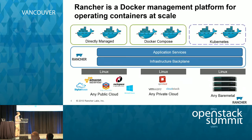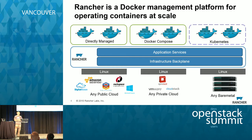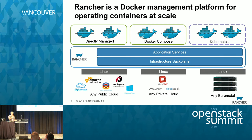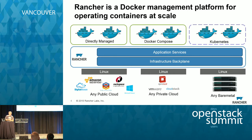With a consistent infrastructure, we can run a set of application services and support different ways of managing applications on the Docker platform. Docker Compose is quite popular today and gaining momentum, though relatively new. Most Docker users still manage apps directly — running scripts or typing commands like Docker Run. Coming down the line, even newer technology like Kubernetes, championed by Google, will provide even more advanced ways of running applications. Rancher will be a platform where all these different application management frameworks run seamlessly, regardless of what infrastructure or cloud you're on.